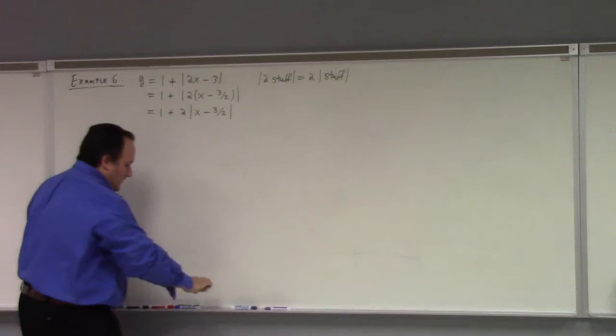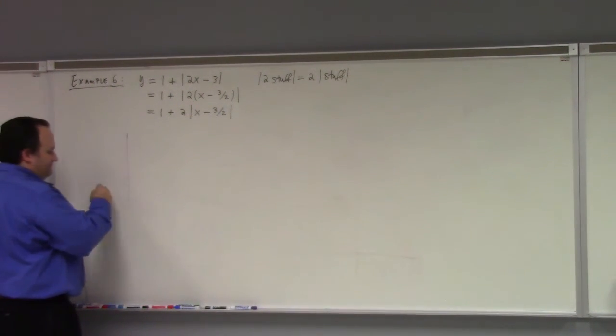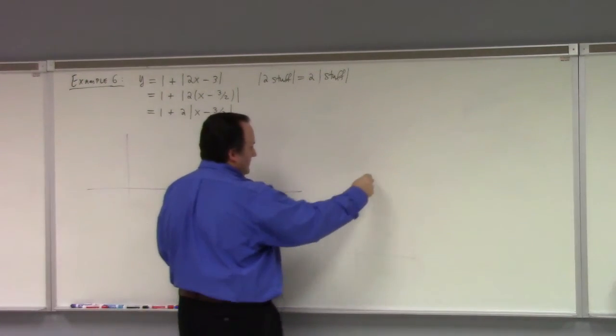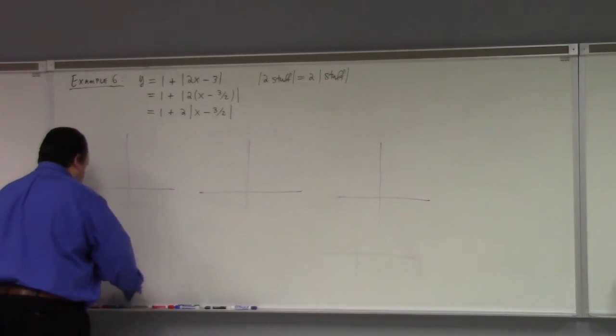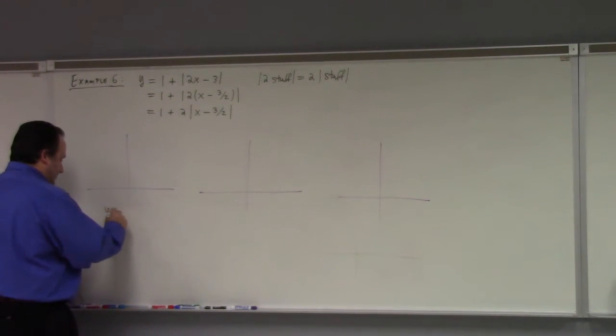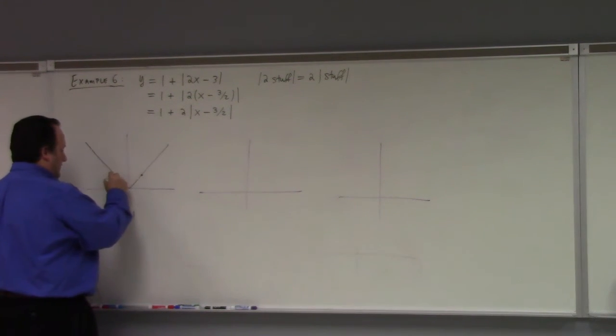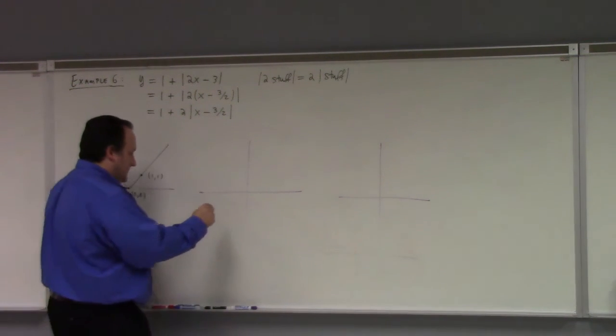So then for this one, you want to keep track of 3 points, because you want some sense of scale. So I'll track 3 points. We have y = |x|. It's going to look like this. So these points: (1, 1) and (-1, 1). I'm just going to track those 2 points and the origin. My next move is to shift 3/2 to the right.